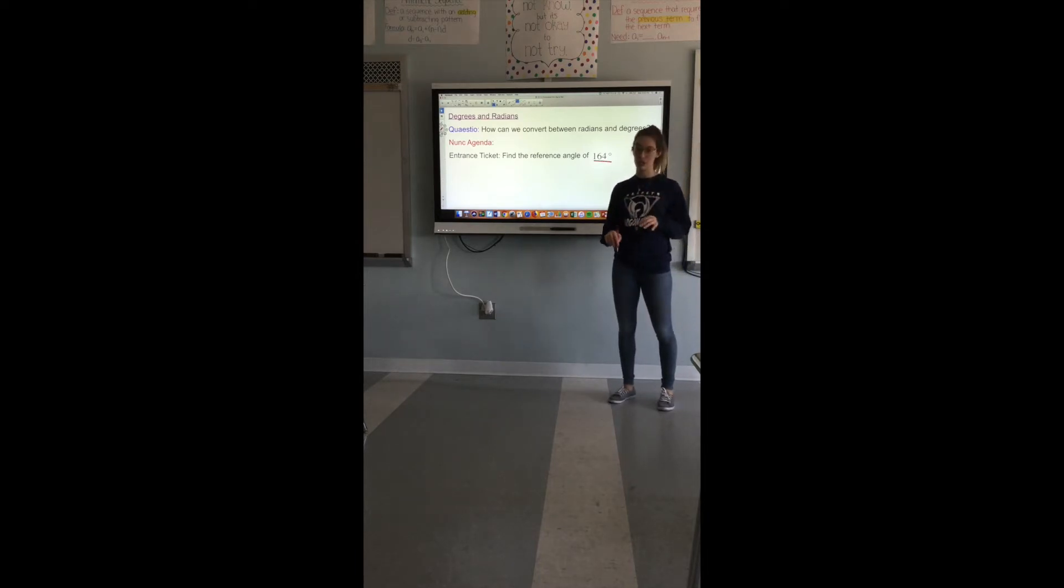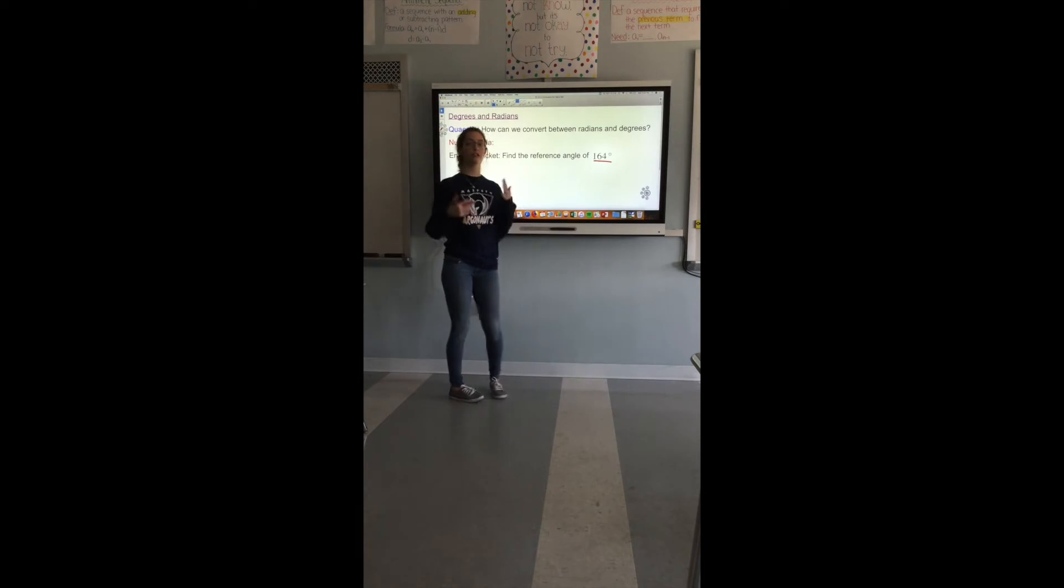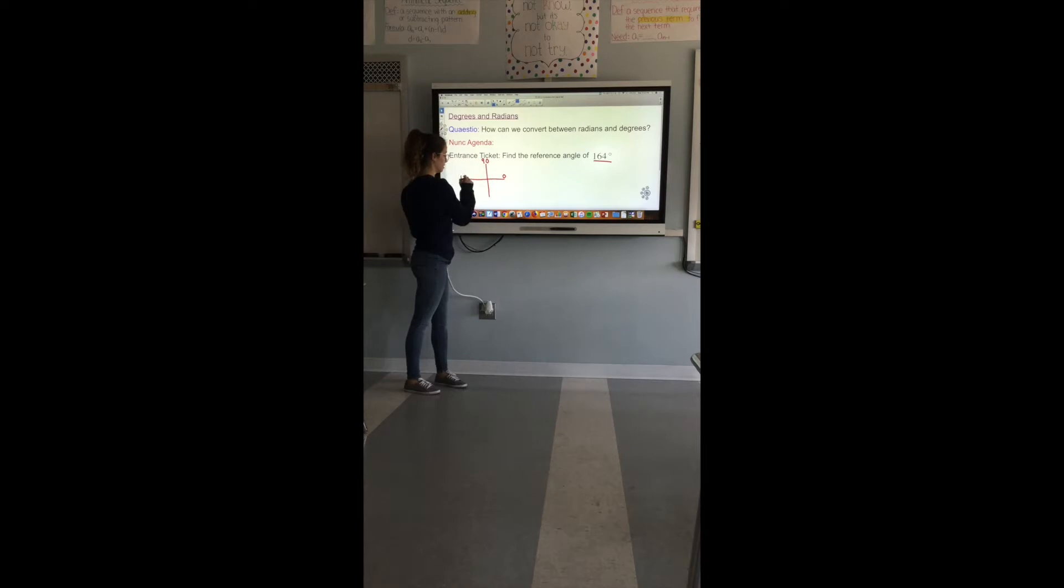Now remember to find the reference angle first thing you need to do is figure out where this angle is, so you always start with kind of a little picture. In this picture we have zero degrees, 90, 180, 270 and 360. This angle 164 is somewhere between 90 and 180. You always start at the top right quadrant and then you go counterclockwise so this is one, that means this will be two, this will be three and this will be four. So it is in quadrant two.